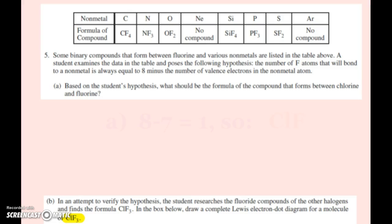We're looking at question number five here from the 2014 free response exam. We've got a nice chart with some nonmetals on the top and formulas of compounds all involving fluorine. Question five says some binary compounds that form between fluorine and various nonmetals are listed in this table. A student examines the data and poses the following hypothesis: the number of fluorine atoms that will bond to a nonmetal is always equal to eight minus the number of valence electrons in the nonmetal.